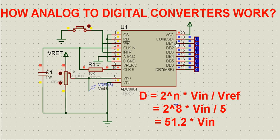This ADC has got three control pins: pin number one chip select, pin number two read, and pin number three write. These three are control pins, and it has eight data pins — DB0 to DB7.